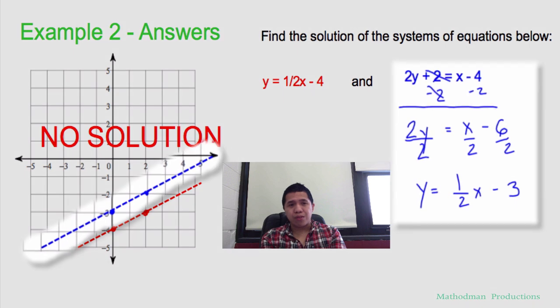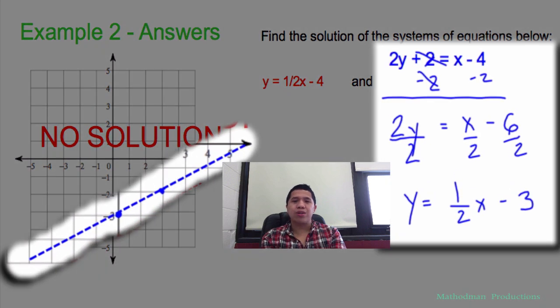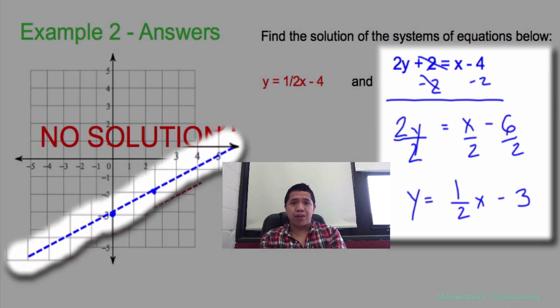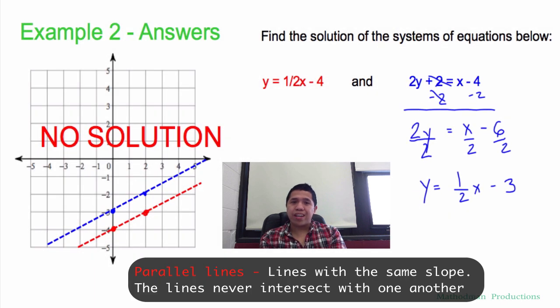The one in blue you had to solve for y first. So solve for y and you get y equals one-half x minus three. If you graph the two lines, they're parallel. Parallel means they have the same slope and they will never cross.